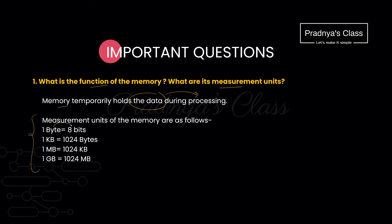The smallest unit is byte. One byte is equal to 8 bits. Followed by that we have KB, that is kilobytes — one kilobyte is equal to 1024 bytes. After KB the next higher unit is MB; one MB is equal to 1024 kilobytes. The next higher unit is GB, that is gigabytes — one gigabyte is equal to 1024 megabytes.